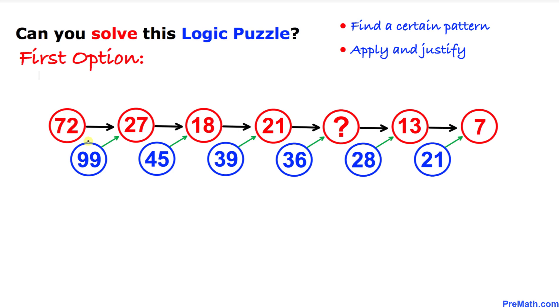Here's the very first step. I'm going to put 99 minus 72. If we subtract, we're going to get 27, isn't it? Likewise, we're going to do the same thing. 45 minus 27, this number is going to give us 18.